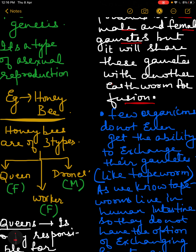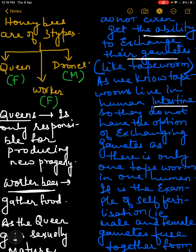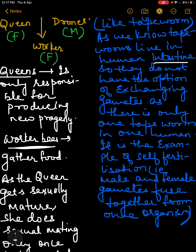Next, there is another exception — some organisms do not even have the ability to exchange their gametes. Earthworm was bisexual and could exchange gametes, but there are certain organisms which cannot, like the tapeworm. Tapeworms are formed in the human intestine and every human has only one tapeworm, so it cannot exchange gametes with another. This is an example of self-fertilization.